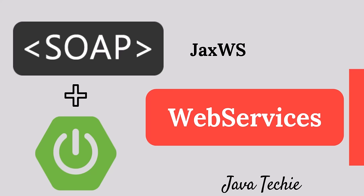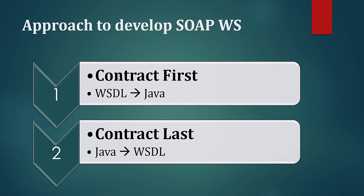Welcome to Java Techie. In this tutorial we are going to discuss how to develop SOAP-based web services using Spring Boot framework. Basically there are two ways to develop SOAP-based web services: contract-first approach and contract-last approach. In the contract-first approach, first we need to write our WSDL file, then from the WSDL file we need to generate our Java binding classes. In the contract-last approach, first we need to write our Java implementation, then from the implementation we generate the WSDL file at runtime.